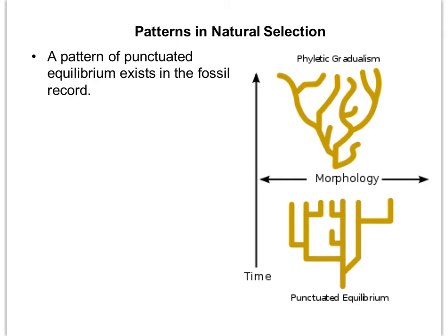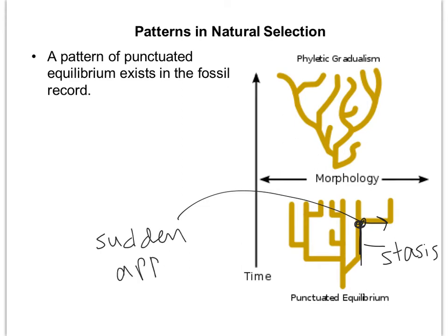When Darwin first looked at the fossil record, he thought it followed gradualism — that organisms were always changing and new species were always coming about. But what we've actually seen in the fossil record is a pattern called punctuated equilibrium. A new species only emerges at certain points in time. The long periods with little evolutionary change are called stasis. At branch points we see the offshoot of a new species — called sudden appearance — which on an evolutionary time scale can still mean thousands or even a million years.